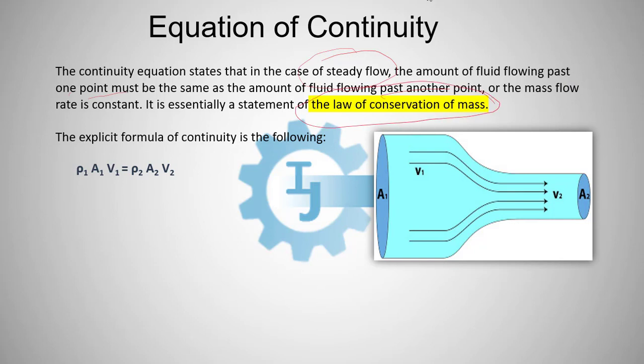So, as per continuity equation, suppose this is section 1 and this is section 2. At section 1, the average velocity of fluid is V1 and at section 2, the velocity is V2. The cross section at section 1 is A1 and at section 2 is A2.